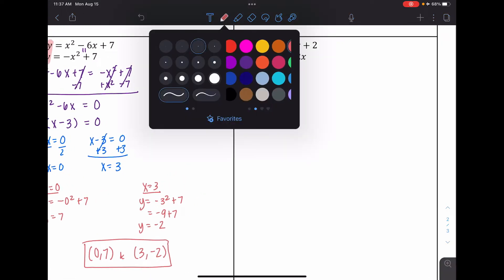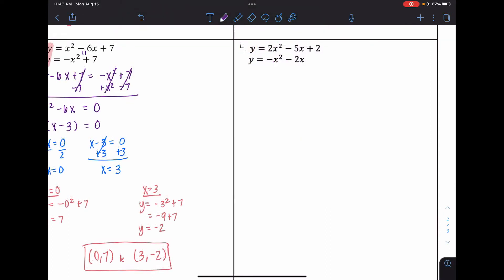Okay, let's look at one last one. Okay, so now for number 4, I have y equals 2x squared minus 5x plus 2, and y equals negative x squared minus 2x. So they're both equal to y, so that means they're both equal to each other. So I have 2x squared minus 5x plus 2 is equal to negative x squared minus 2x. I want this to be in standard form, so I'm going to add x squared and 2x to both sides.